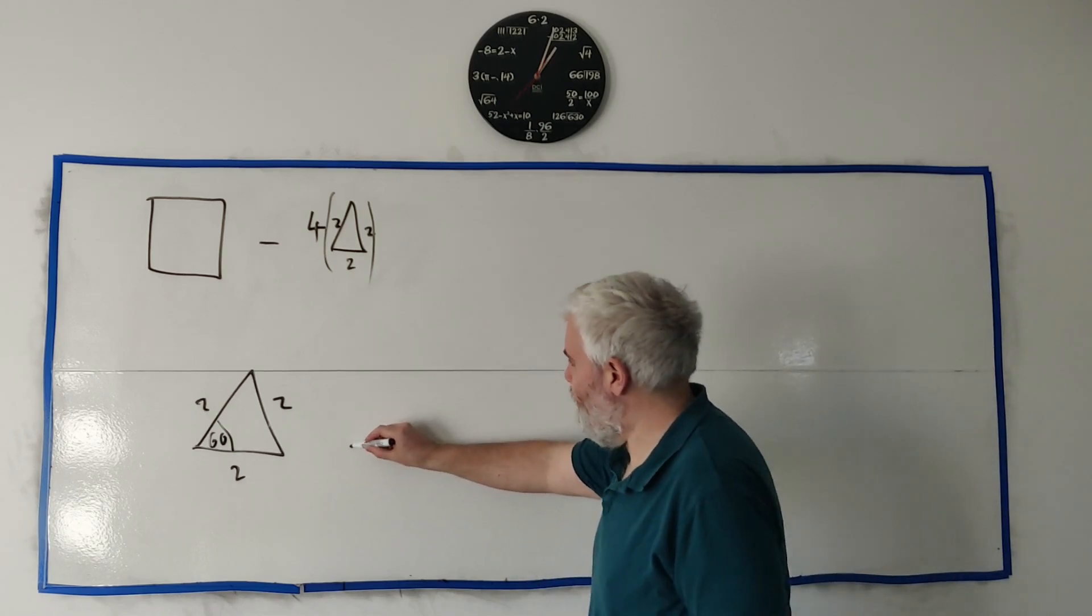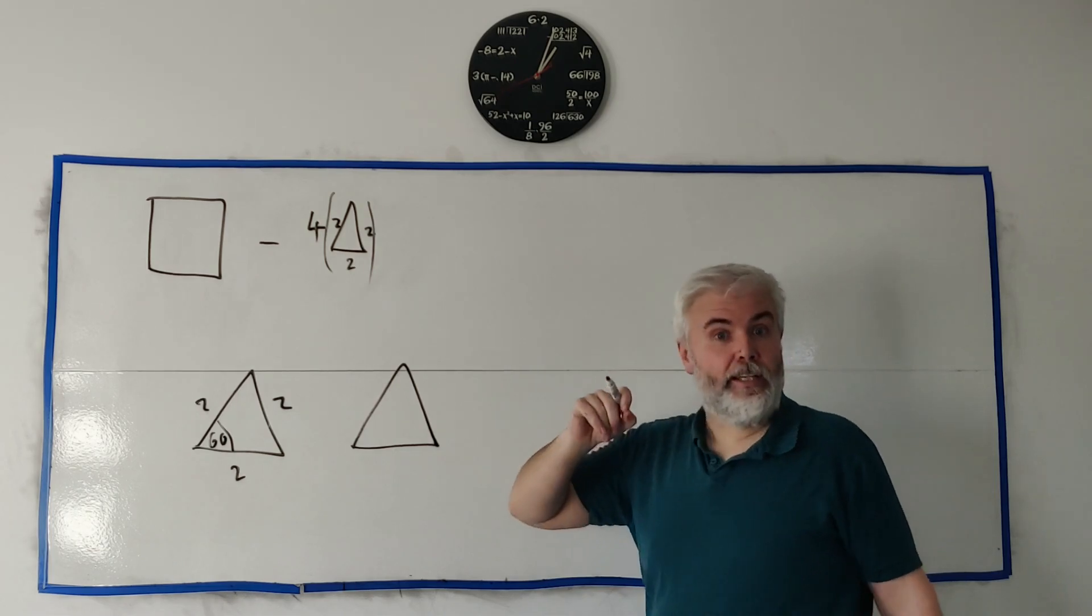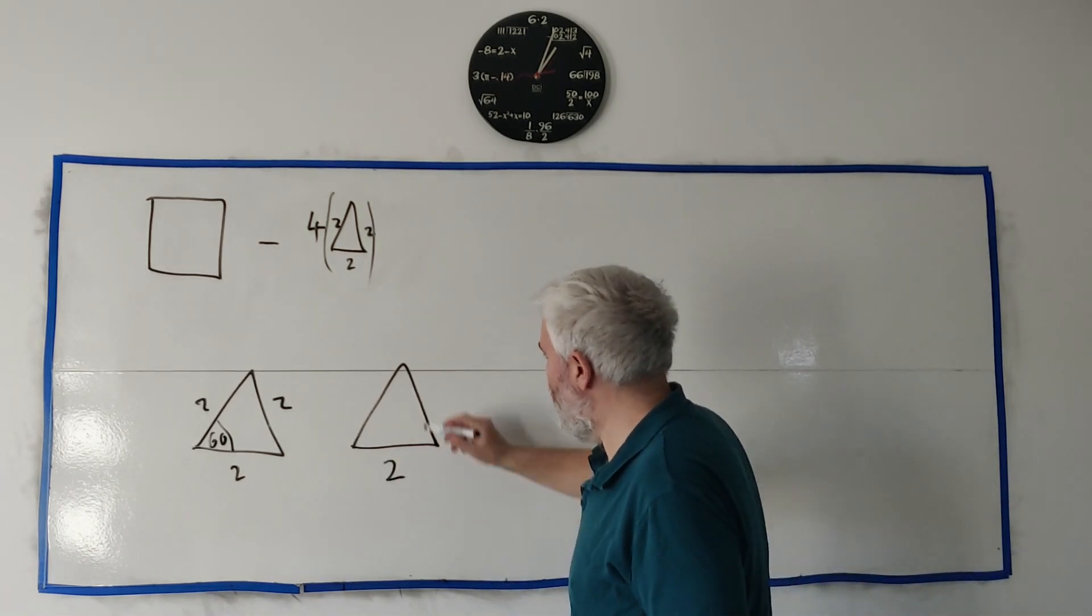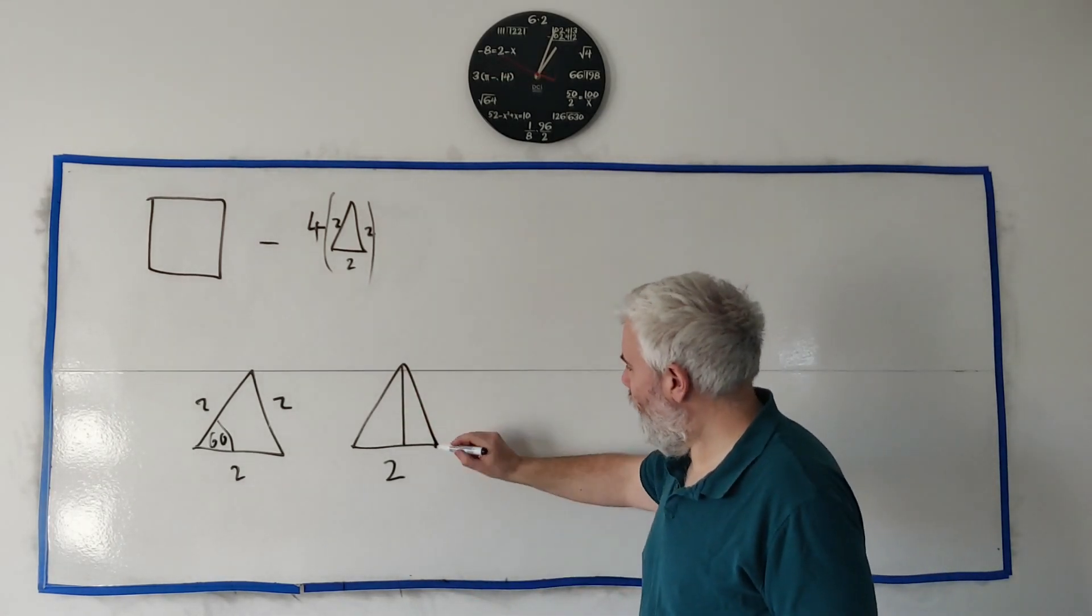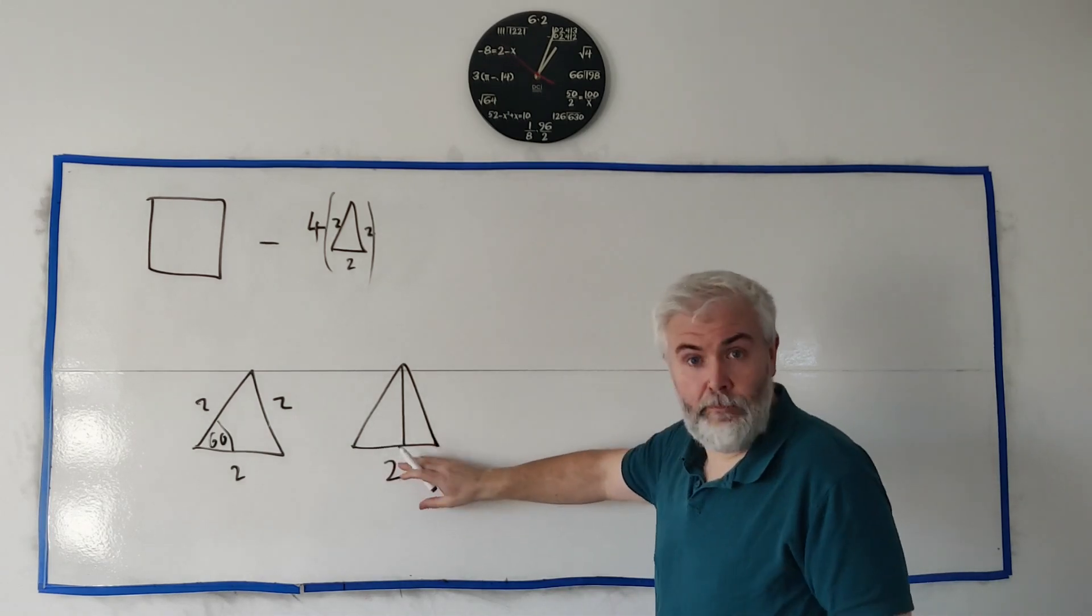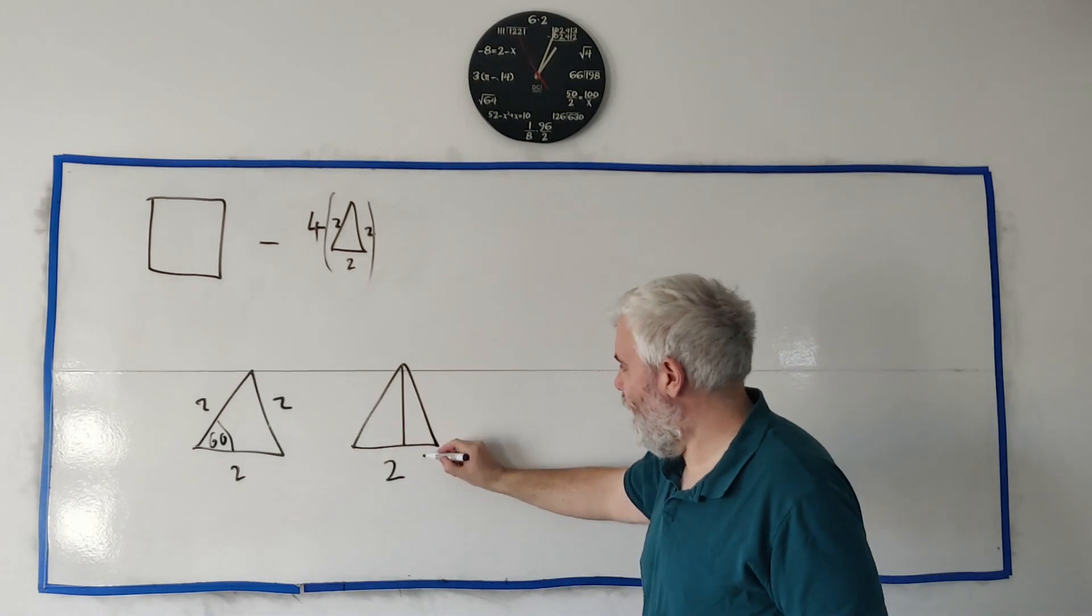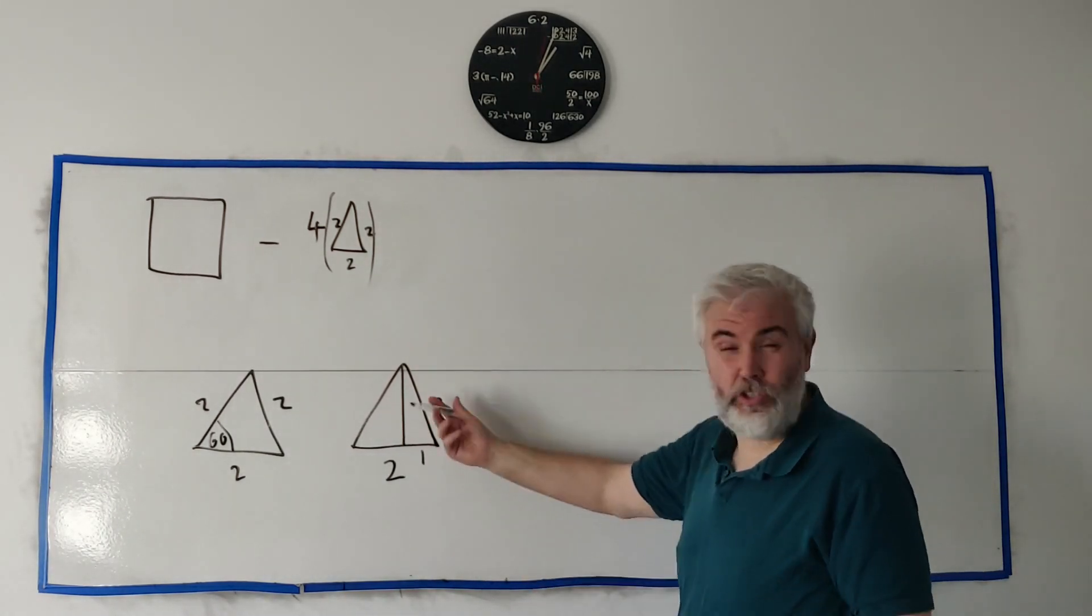Let me do it a third way, maybe the simplest way. We are going to multiply the base by the perpendicular height. In this case the base is two. We just want to know what the perpendicular height is. We can find that by halving the bottom because the line coming down here cuts this in half, so that's one. The length here is two, so we just use Pythagoras theorem.